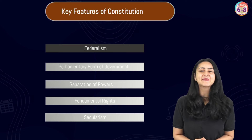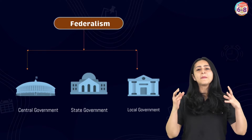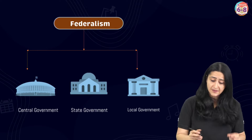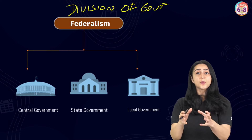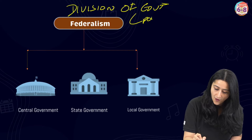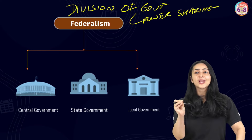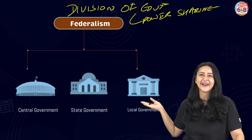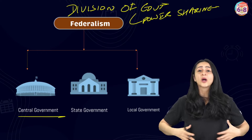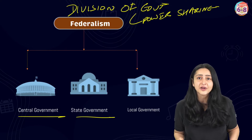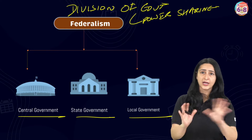Let us start with the first main feature of our constitution, which is federalism. Federalism is the system of division of government in which entities such as states or provinces share power with the central government — basically, it is a form of power sharing. When it comes to India, power is shared among three tiers of government. These three tiers are the central government, the state government, and the local government.